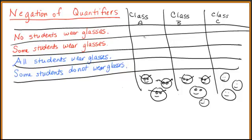Let's look at what happens in these three different classrooms. In class A, every student is wearing glasses. In class B, some students wear glasses, some students don't. In class C, no students are wearing glasses at all.